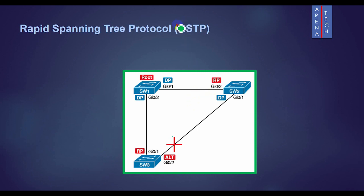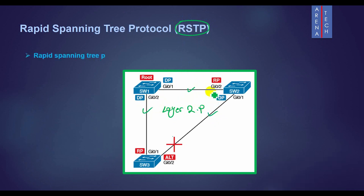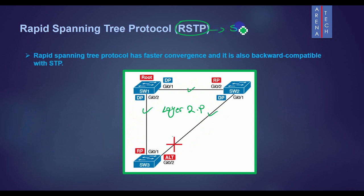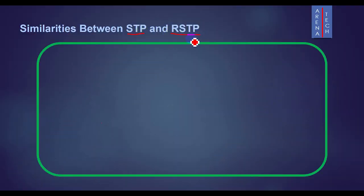Welcome. Today I want to discuss RSTP. RSTP is the more improved and advanced version of STP, which is a Layer 2 protocol that prevents bridge loops and broadcast storms in local networks with redundant connections. Rapid Spanning Tree Protocol has faster convergence and is also backward compatible with STP. The IEEE standard for Rapid Spanning Tree Protocol is 802.1W. With RSTP, the IEEE improved the convergence performance of STP from 15 seconds to less than 10 seconds.